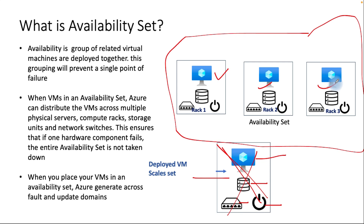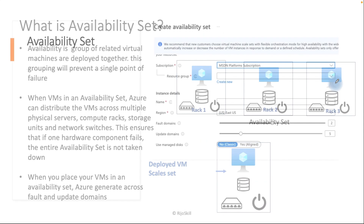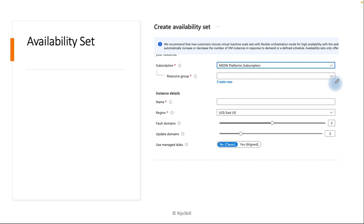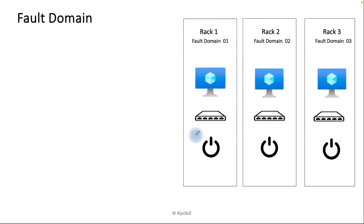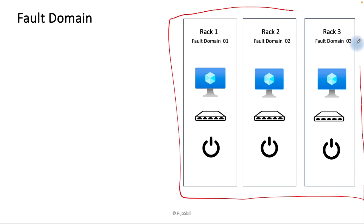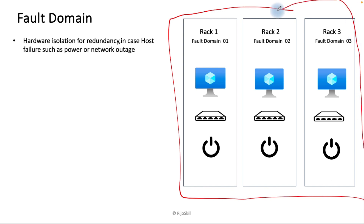If your virtual machine goes down, you won't face a single point of failure because rack one, rack two, and rack three are available — the availability set of the VMs is available. When you place your VM in the availability set, Azure will distribute it across fault domains and update domains. When you create the availability set in the Azure portal, you can see the fault domain and update domain options.